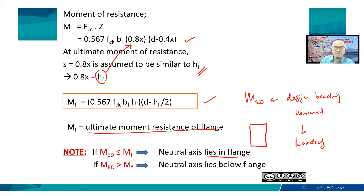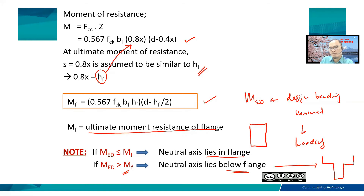If M_ED is larger than M_F, the neutral axis lies below the flange and we design the beam by considering the full flange section, either as a T-beam or L-beam.